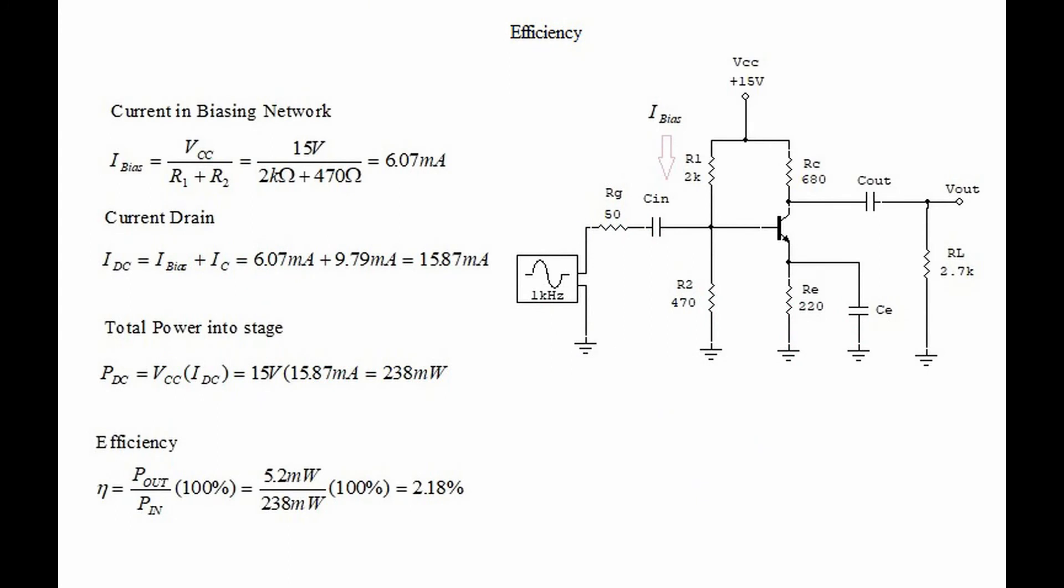We return to our original schematic diagram because now we need to do some more calculations involving efficiency of the stage of amplification. We begin by calculating the current in the biasing network. The biasing network is formed by R1 and R2.